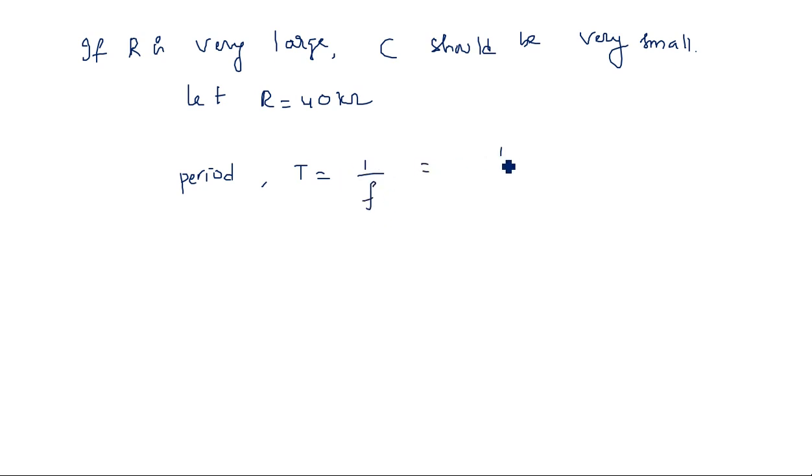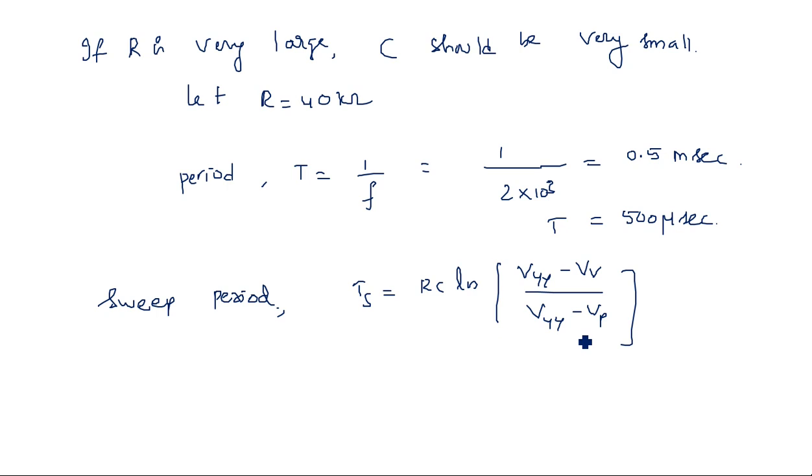The formula for the period T equals 1 by f, 1 by 2 kilohertz equals 0.5 milliseconds, which can also be written as 500 microseconds. This is T. Coming to the sweep period, whereas T was the overall time period consisting of T_S and T_R. T_S, the sweep period, equals R times C times natural log of V_YY minus V_V divided by V_YY minus V_P, where V_YY equals 20 volts.